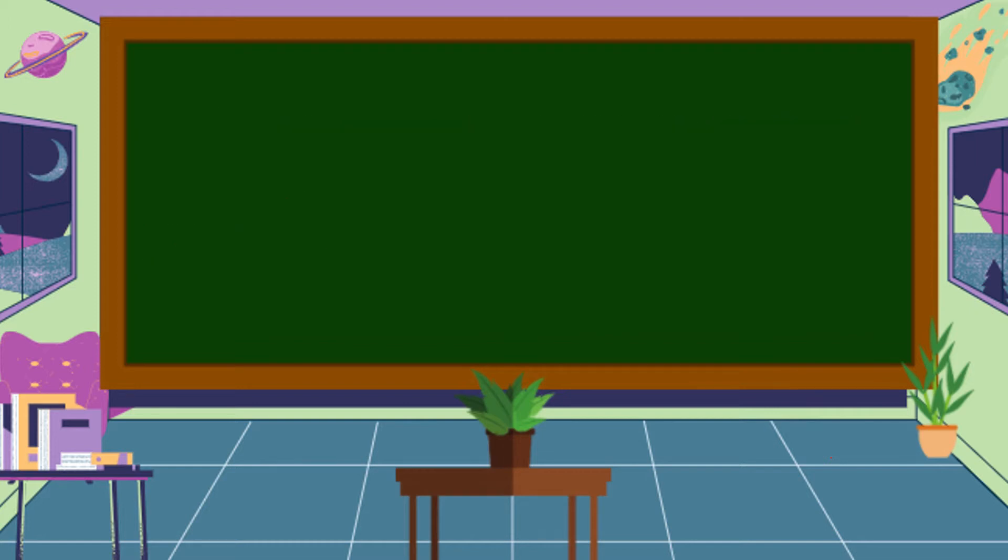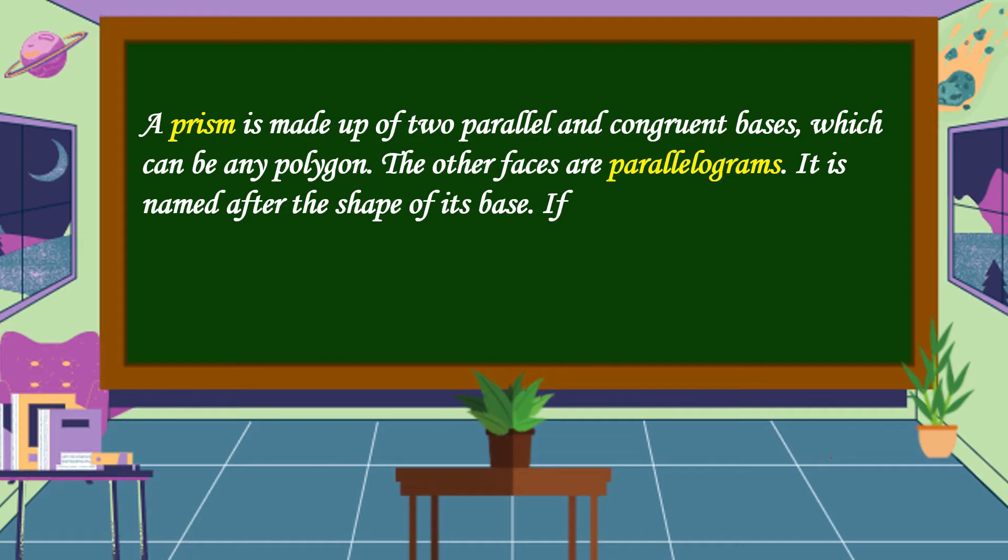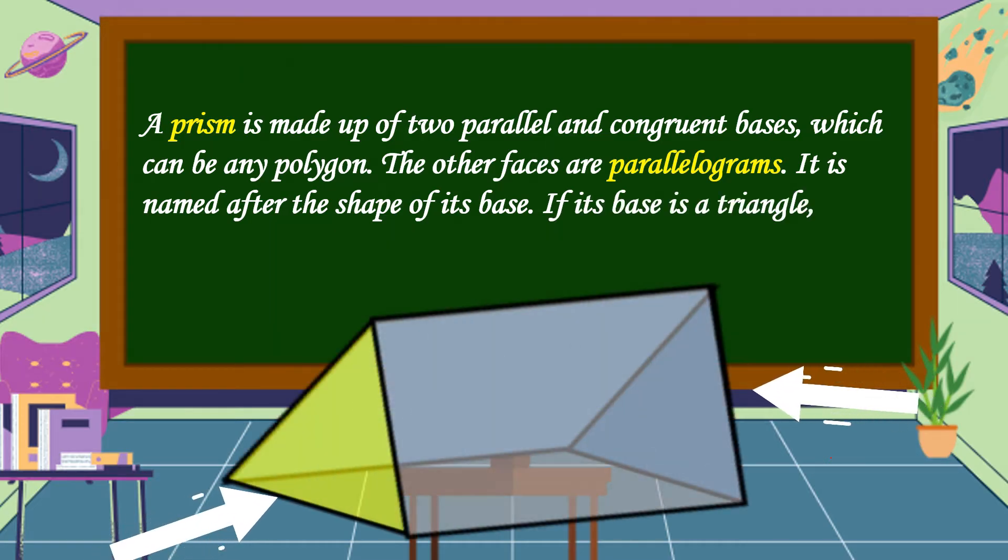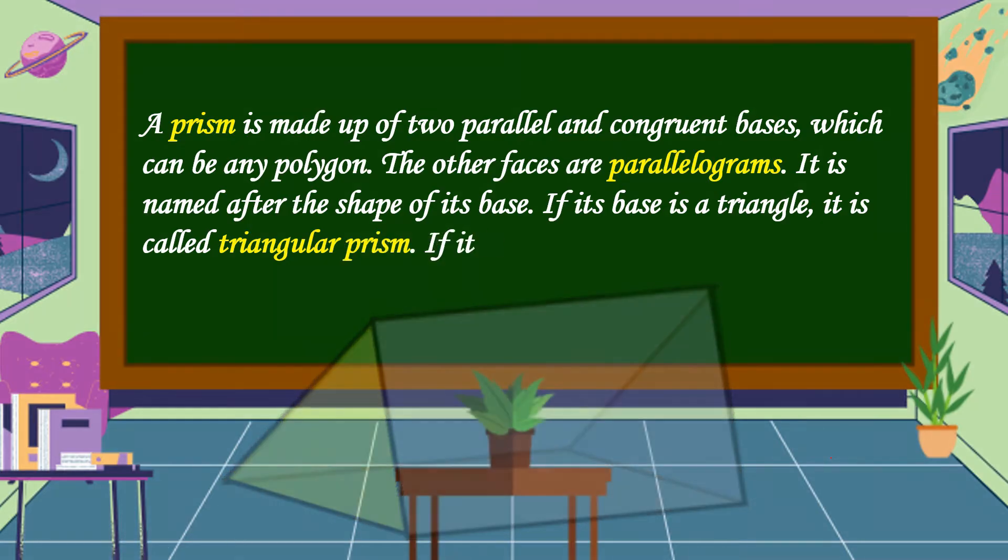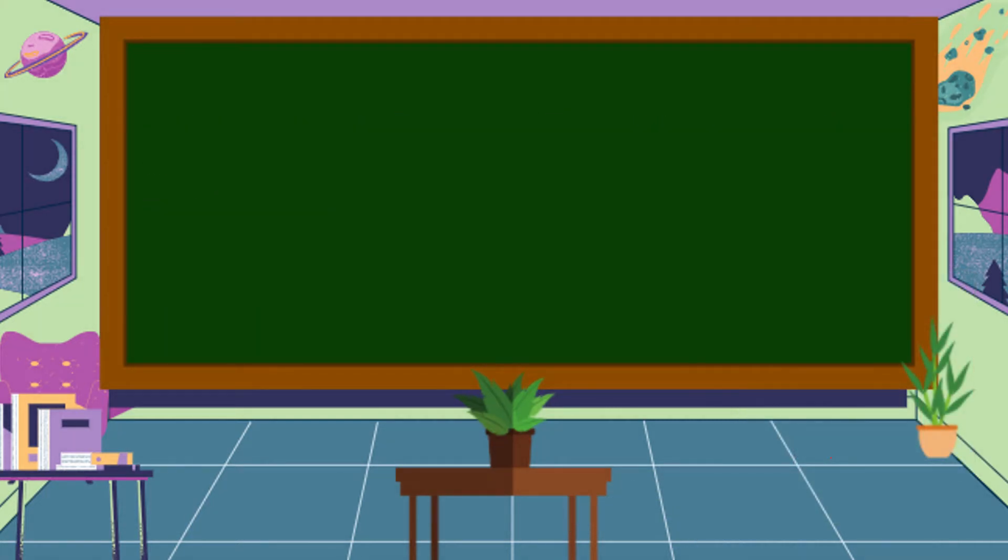What is a prism? A prism is made up of two parallel and congruent bases which can be any polygon. The other faces are parallelograms. It is named after the shape of its base. If each base is a triangle, it is called a triangular prism. If each base is a hexagon, it is called a hexagonal prism.